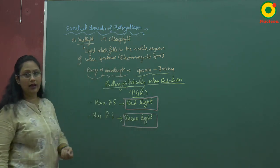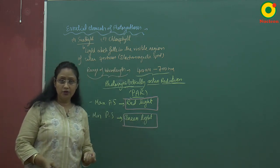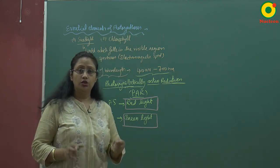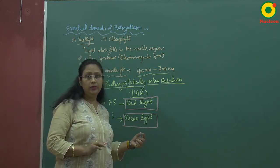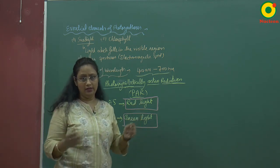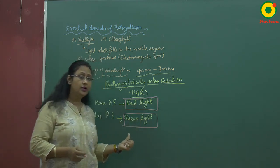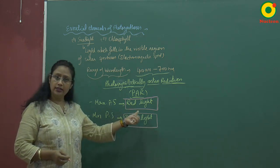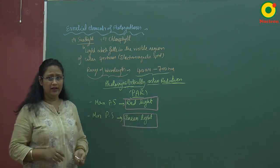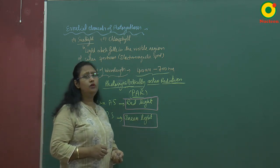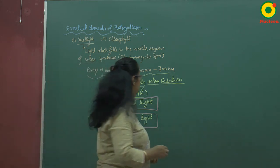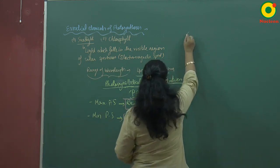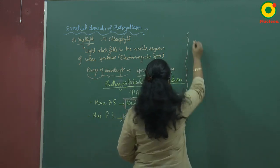Why does minimum photosynthesis occur in green light? Because the green parts of the plant reflect all green light, so minimum synthesis occurs in green light, and maximum photosynthesis occurs in red light.